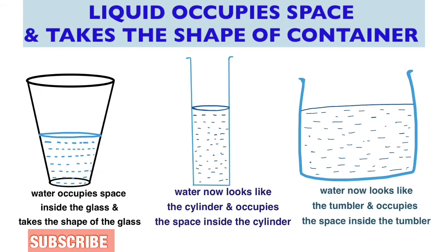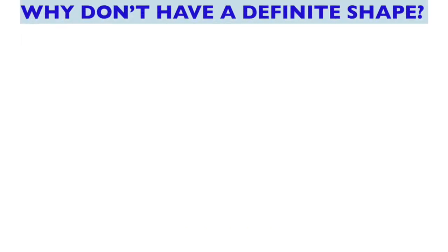Thus every time we change the container liquid will also change its shape according to the container in which it is kept. Liquids do not have a definite shape and can take the shape of the container.